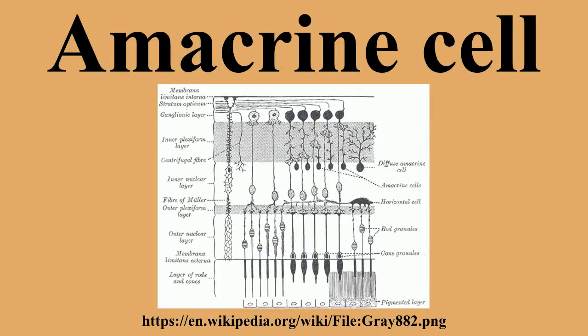Amacrine cells are often classified by the width of the field of connection, which layer of the stratum in the IPL they are in, and by neurotransmitter type. Most are inhibitory, using either gamma-aminobutyric acid (GABA) or glycine as neurotransmitters. Each type of amacrine cell releases one or several neurotransmitters where it connects with other cells.